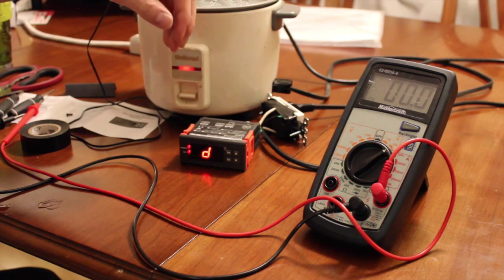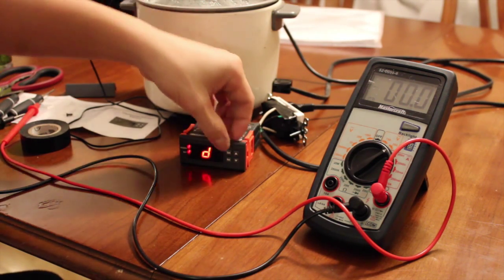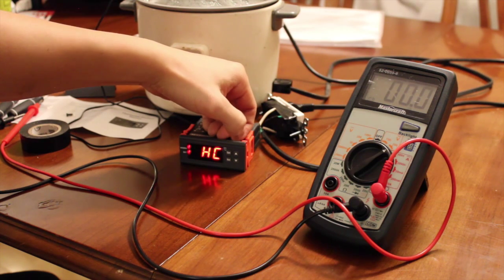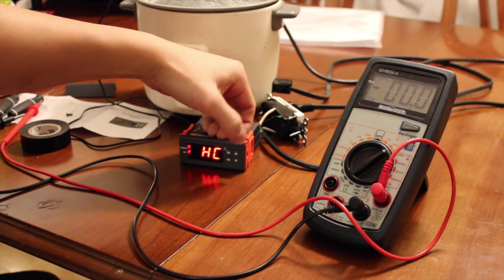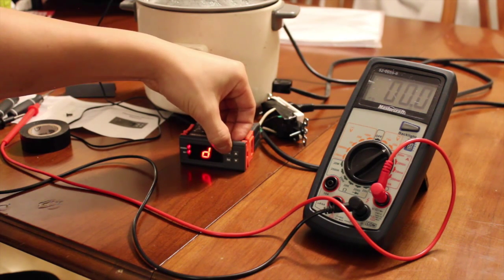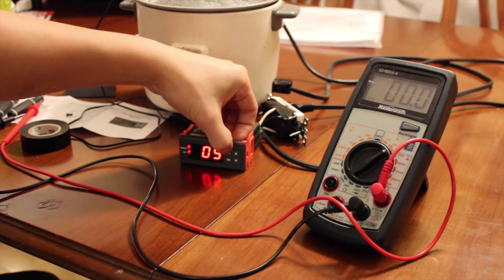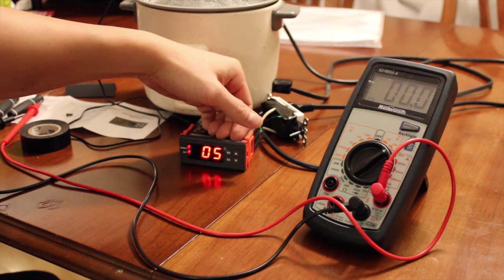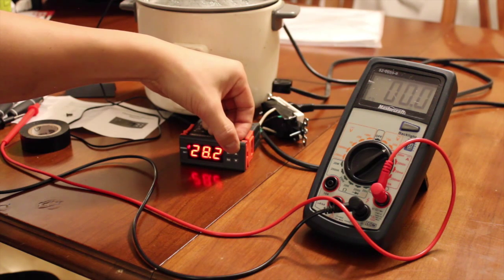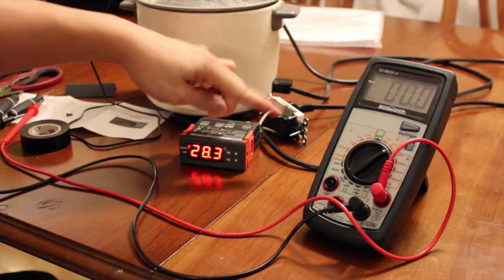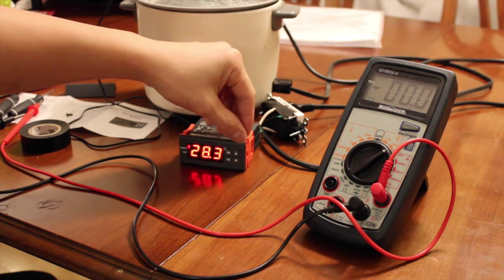D is hysteresis. Hysteresis means that if I set it to 60 degrees and we go to 60, it will turn off the machine. And since I set it to 5 degrees here, it won't turn back on until it's 55 degrees, which is 60 minus 5. This is so that you don't have a quick switching right around zero.